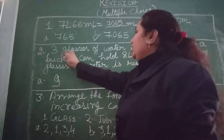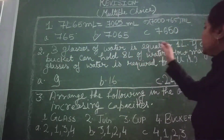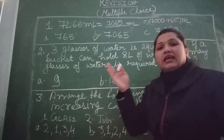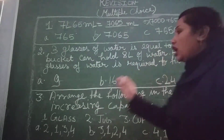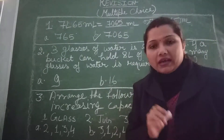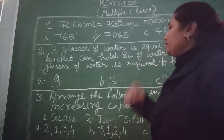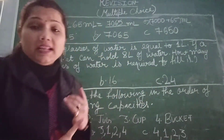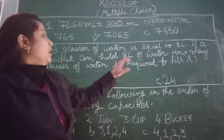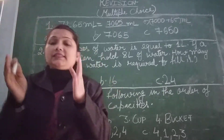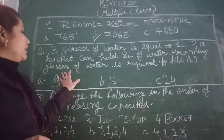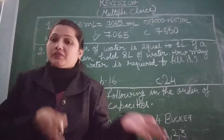Now see the next question. 3 glasses of water is equal to 1 litre. So if a bucket can hold 8 litres of water, how many glasses of water are required to fill the bucket? Here, 1 litre is equal to 3 glasses of water, and the bucket can contain 8 litres of water. We will have to find out how many glasses of water are required to fill the bucket.